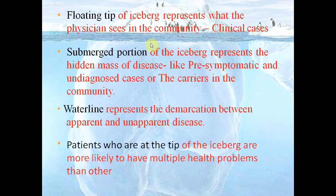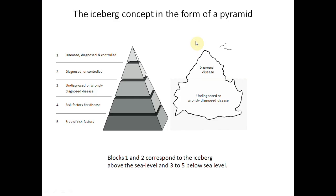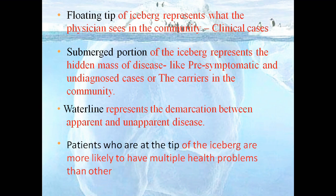The floating tip of the iceberg represents the clinical cases — the known cases that the physician sees, because they express some symptoms so they go to the clinician and are diagnosed as diabetic. The submerged portion — the vast portion — represents the hidden mass of disease. They are not showing any symptoms, so they are not being diagnosed. They might be diagnosed accidentally during a routine blood checkup or other investigation. Otherwise, they remain submerged because they are pre-symptomatic most of the time.